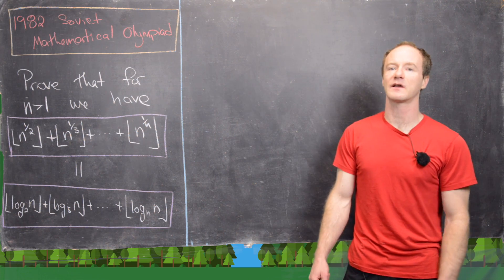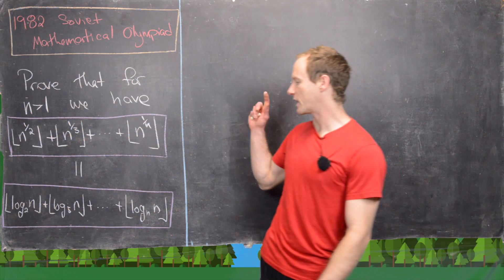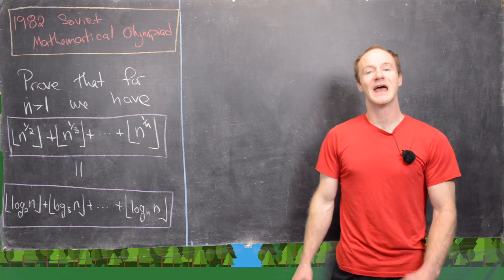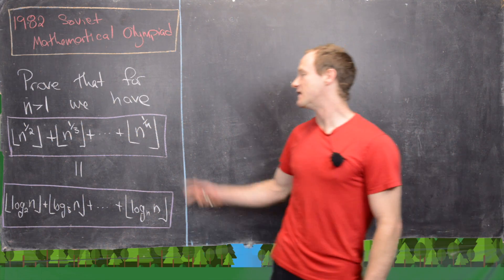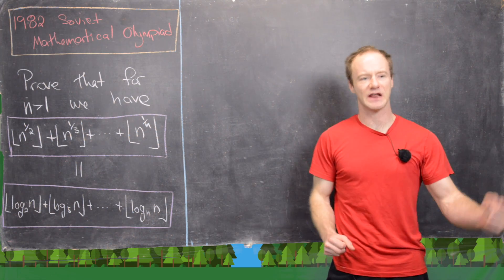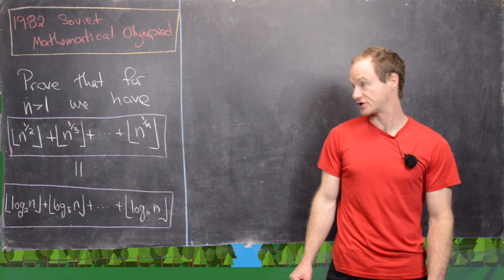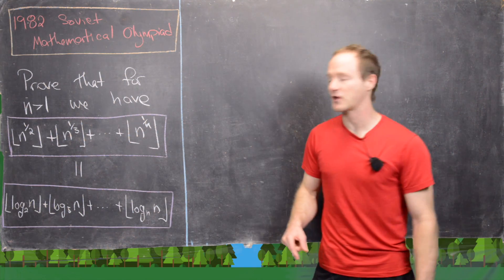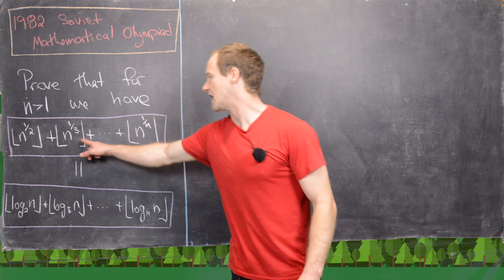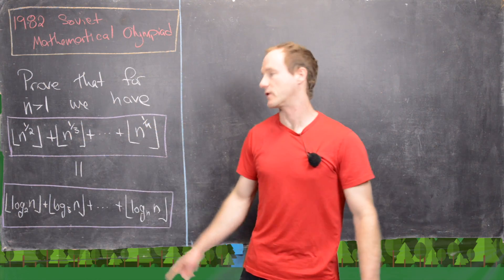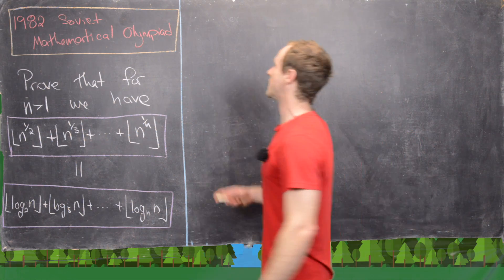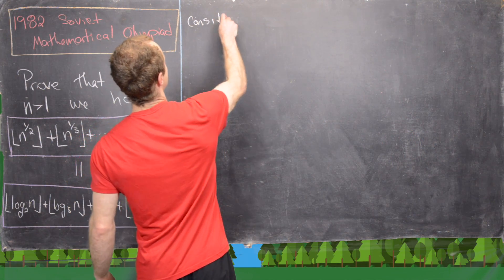Our strategy here will be to look at a continuous version of this problem. We want to choose either the top part or the bottom part of the equality and think about some continuous function represented by this sum — either by taking a derivative, an integral, or some other algebraic combination. We'll take the top part of the sum, and notice it has base n in all terms with variable exponents: 1/2, 1/3, all the way to 1/n. So that motivates us to consider the continuous function y = n^(1/x).